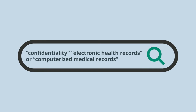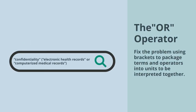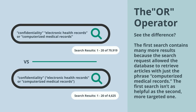This search isn't set up properly yet. Right now, it will look for articles on confidentiality and electronic health records, or articles on computerized medical records — but not necessarily articles on confidentiality. Fix the problem using brackets to package terms and operators into units to be interpreted together. See the difference? The first search contains many more results because the search request allows the database to retrieve articles with just the phrase 'computerized medical records.' The first search isn't as helpful as the second, more targeted one.